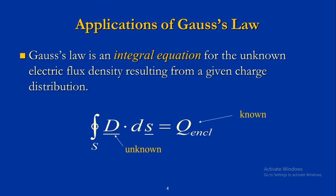Gauss's law is an integral equation for the unknown electric flux density resulting from a given charge distribution. D bar dot dS bar equals Q enclosed, or you can say equals psi.